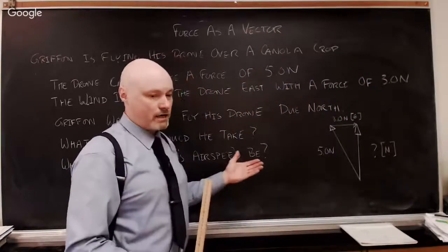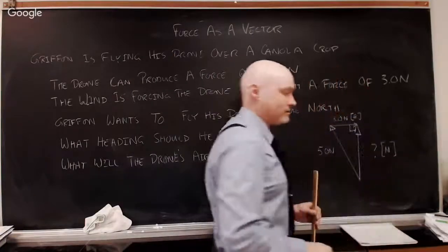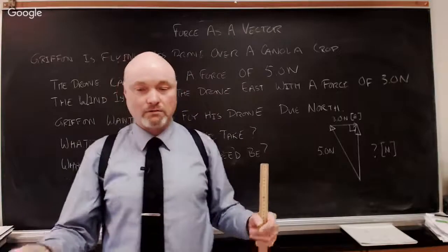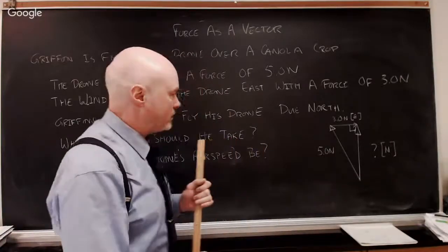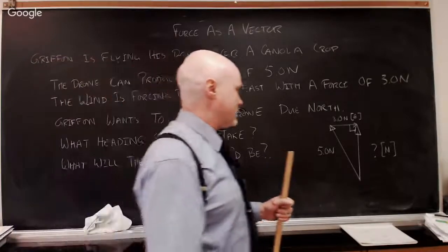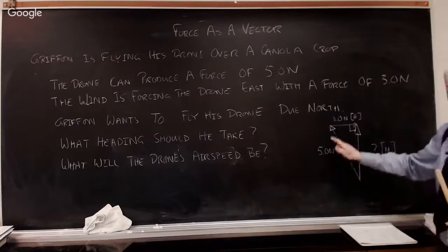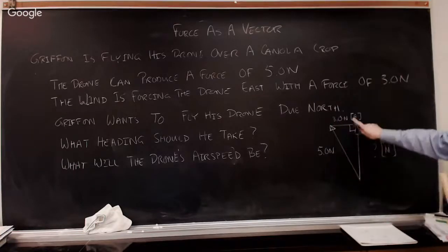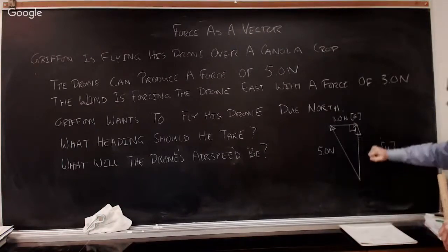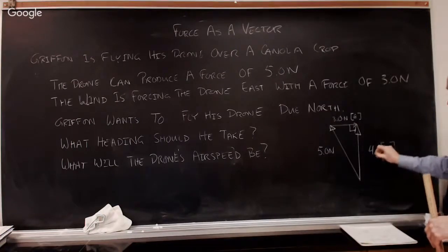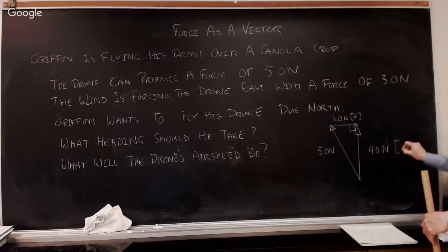This is our triangle. Fortunately, this is a right angle, so this becomes a SOHCAHTOA problem, not a nasty sine or cosine law problem. We're all ready to use our super simple SOHCAHTOA stuff. Oh look, this very well could be a 3-4-5 triangle. Of course it's a 3-4-5 triangle. So I know that this is going to be four newtons north.